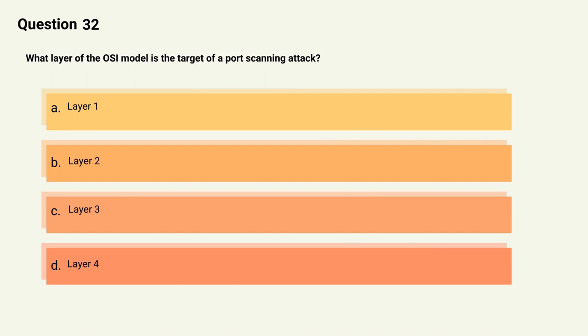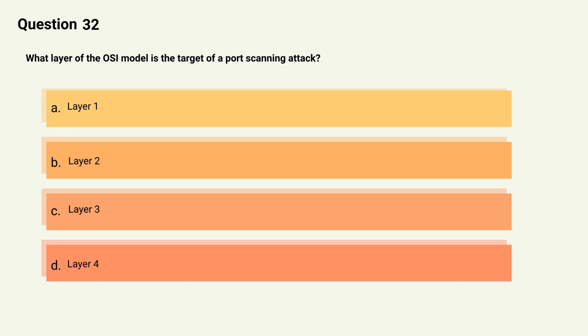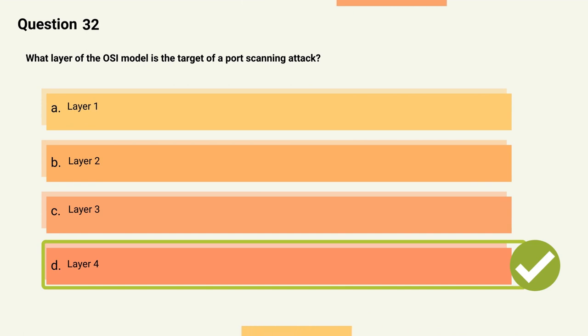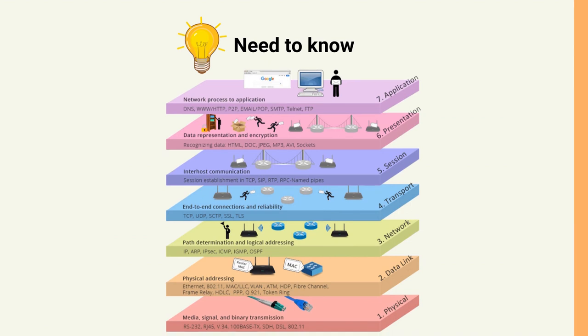Question 32: What layer of the OSI model is the target of a port scanning attack? Options: A) Layer 1, B) Layer 2, C) Layer 3, D) Layer 4. The correct answer is Option D, Layer 4. Explanation: A port scanning attack is a type of reconnaissance attack that targets the transport layer, Layer 4, of the OSI model by scanning a target host's ports to identify open services and potential vulnerabilities.